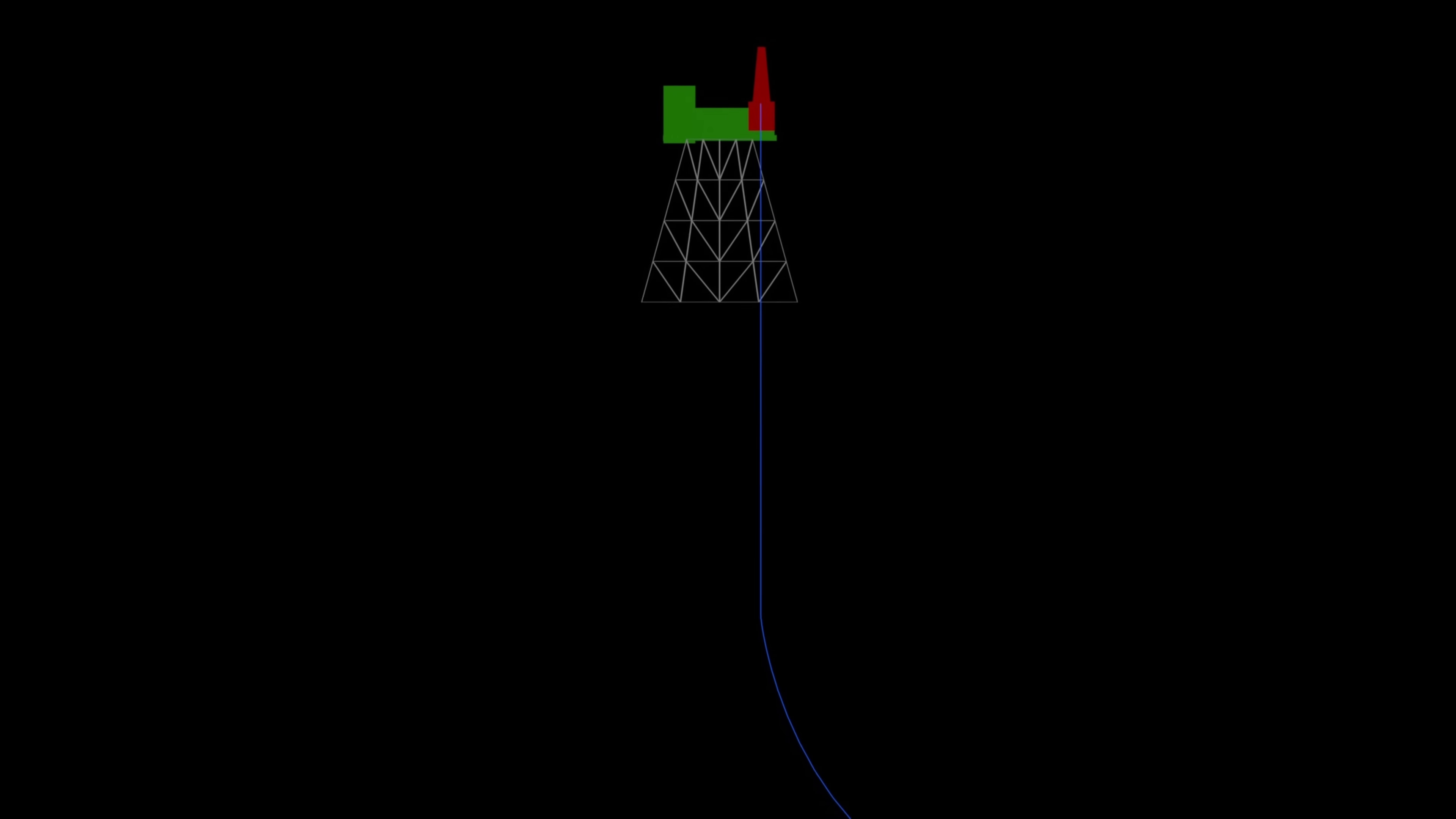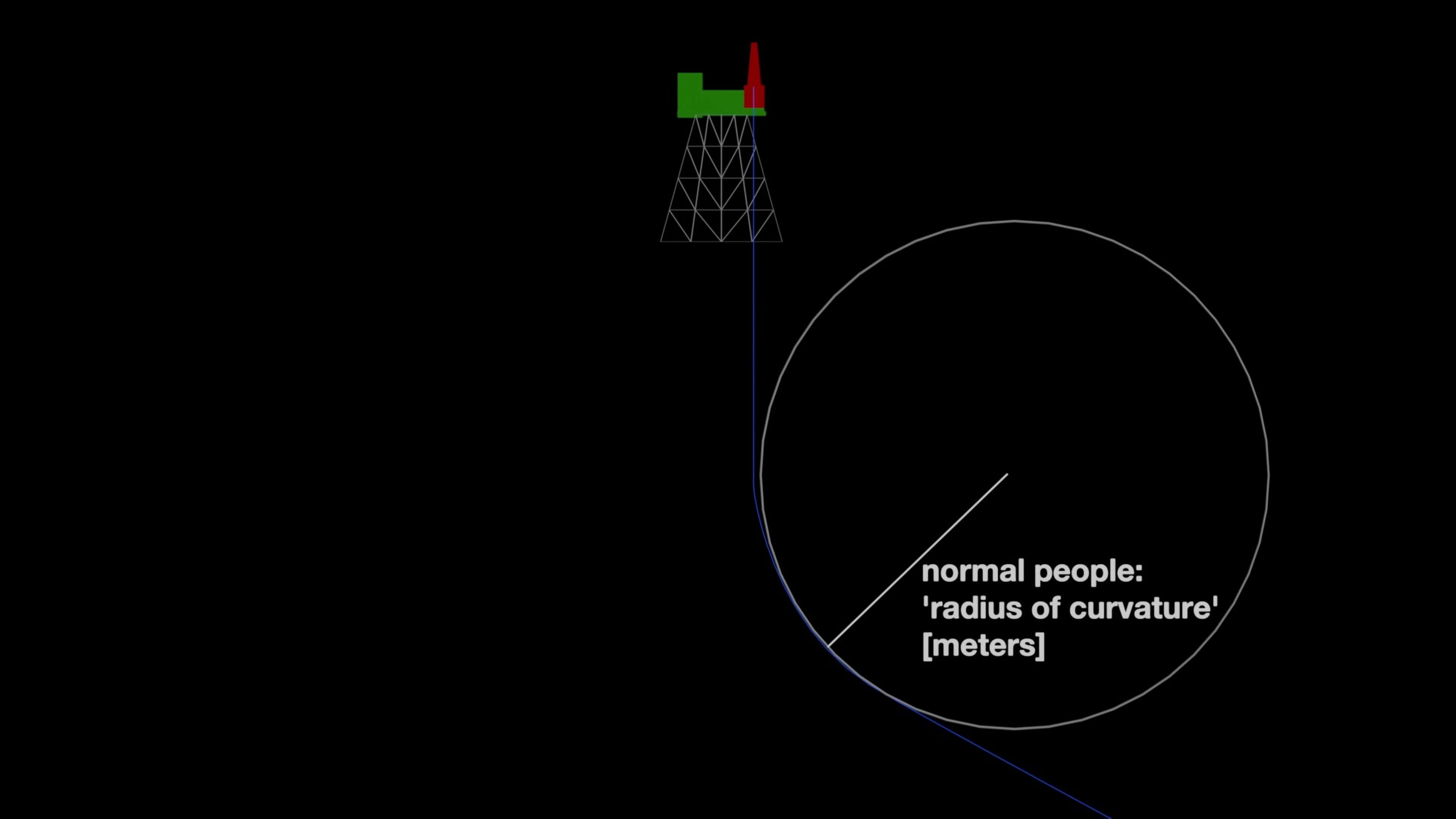Curvature of an oil well. Any normal person would just call this radius of curvature and express it in units of length. For some reason, in oil and gas, everyone calls it dogleg severity and expresses it in degrees per hundred foot drilled.